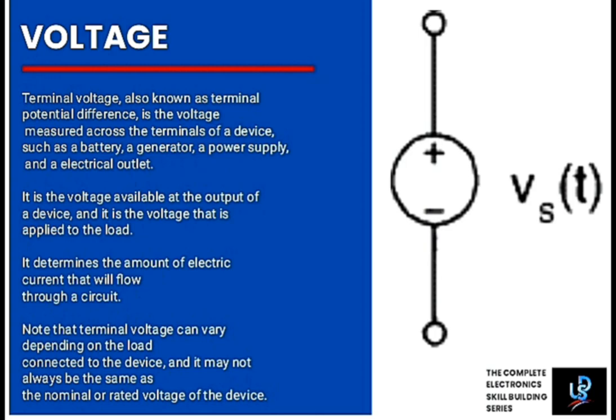Terminal voltage determines the amount of electric current that will flow through a circuit. Voltage drives current. Therefore, low and high voltage will significantly affect the amount of current passing through a circuit. Note that terminal voltage can vary depending on the load connected to the device, and it may not always be the same as the nominal or rated voltage of the device.